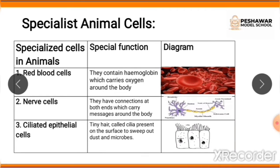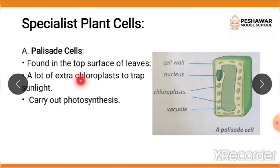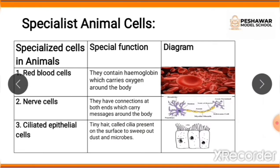If someone asks you why blood appears red, it is because of a chemical known as hemoglobin. Similarly, if someone asks why plants appear green, it is because of the green pigment known as chloroplast. So because of chloroplast we see plants green, and because of hemoglobin we see blood red. Red blood cells contain hemoglobin, which carries oxygen around the body.